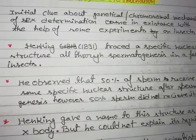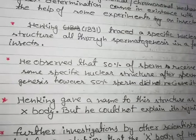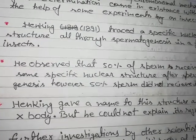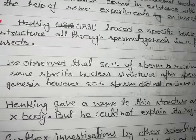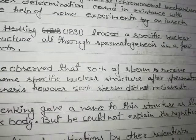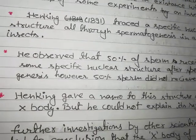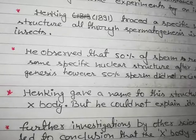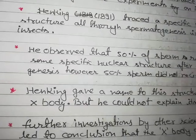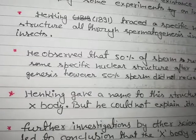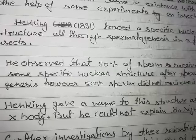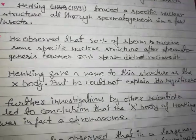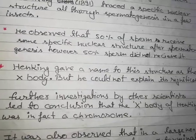Henking gave a name to this structure as the X-body. He said that the special structure is present in some of the sperm and absent in others. He coined the term X-body for these structures. But he could not explain its significance — he found that in some sperms an additional X-body is formed while the rest of the 50 percent do not bear such a special structure.